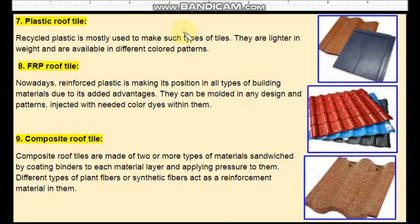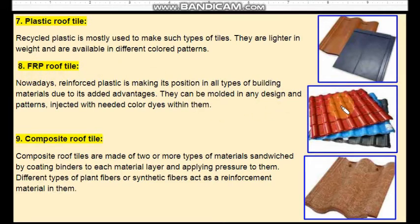Seventh one is plastic roof tiles. These are manufactured from recycled plastic bags. They are lighter in weight and are available in different coloured patterns. They can be injected with any type of colour. These types of materials are gaining popularity in building constructions because they can be moulded in any design and patterns and injected with any type of colour.